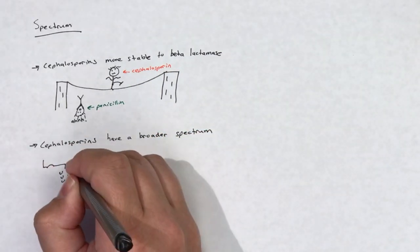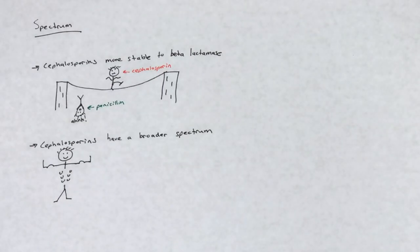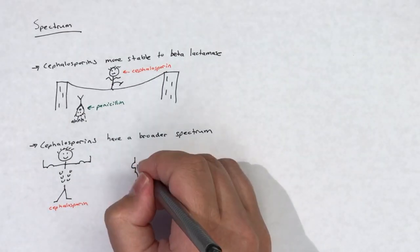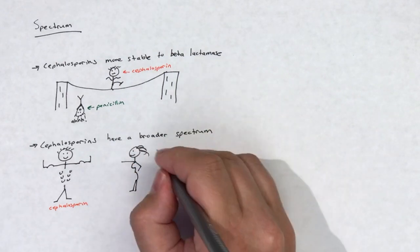A very generalized rule that applies to most cephalosporins is that the first-generation cephalosporins have better gram-positive coverage, i.e. Staphylococcus aureus.